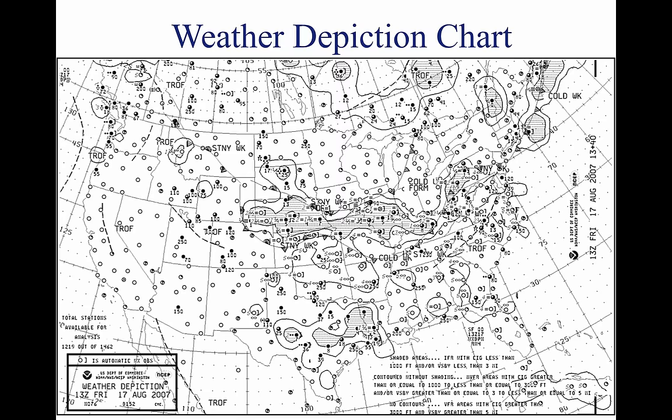Areas of VFR — no ceiling or ceiling greater than 3,000 feet and visibility greater than 5 miles — are not outlined. Weather depiction charts show a modified station model that provides sky conditions in the form of total sky cover, cloud height or ceiling, weather and obstructions to visibility, but does not include wind or pressure readings like the surface analysis chart. A bracket symbol to the right of the station indicates the observation was made by an automated station.